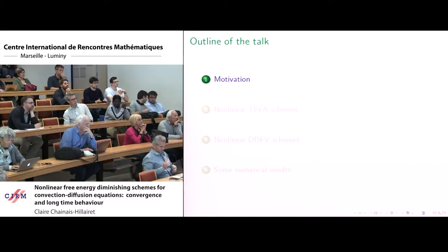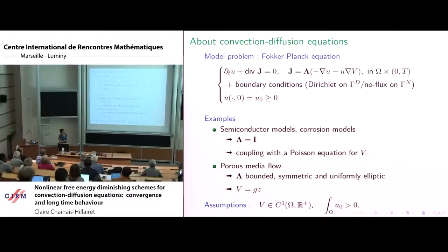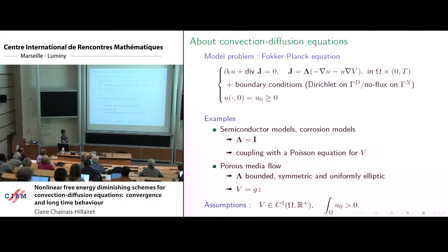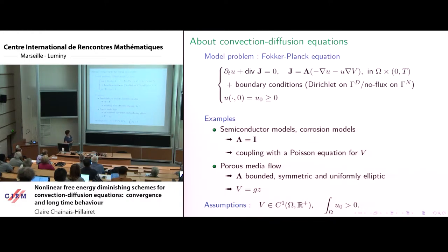I start with the motivation. I will study a very basic problem today: it is a Fokker-Planck equation, so just a convection-diffusion equation. We may have some anisotropy, but we just have linear diffusion and linear convection. The convection field is assumed to derive from a potential V, and this equation will be supplemented with boundary conditions.